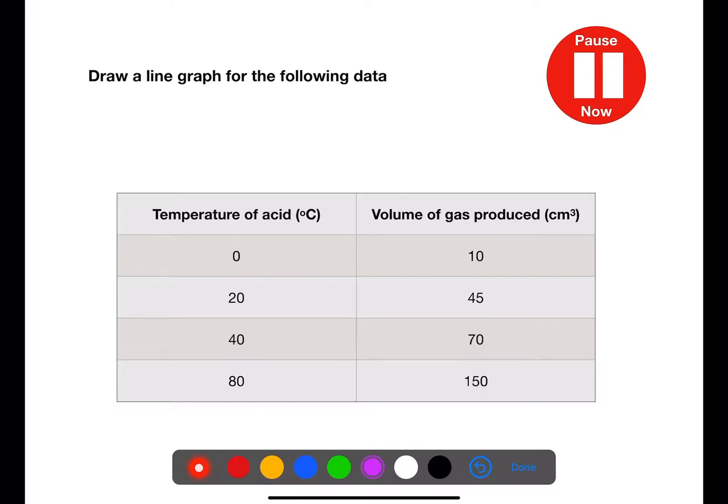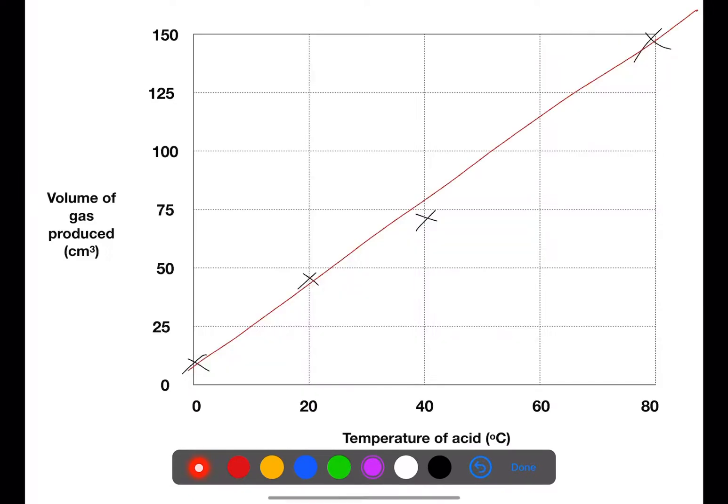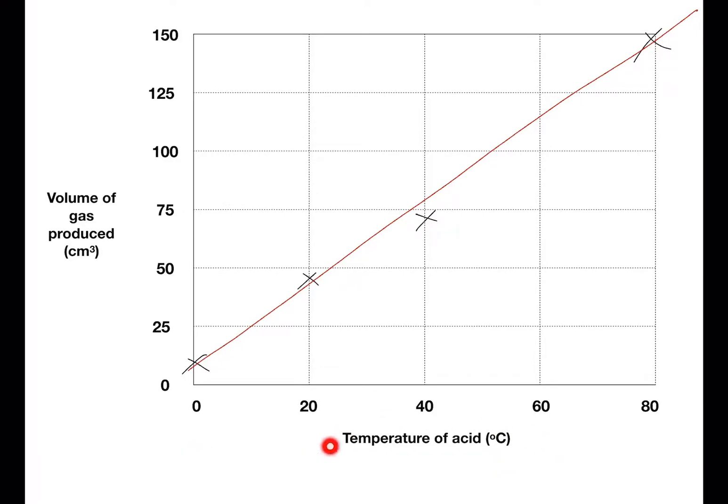Draw a line graph for the following data. So for this data here, we have a label for the x-axis with the appropriate units. We have a label for the y-axis with the appropriate units. Our scale on the x-axis goes up in twenties.